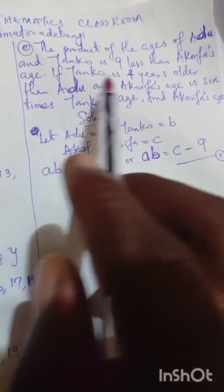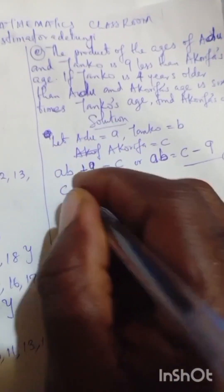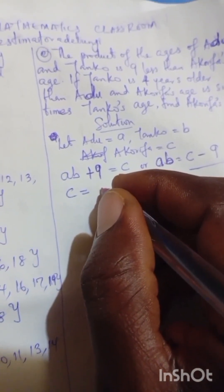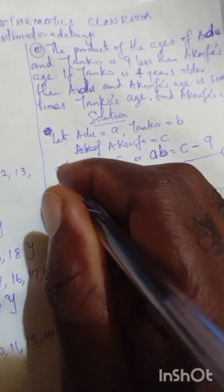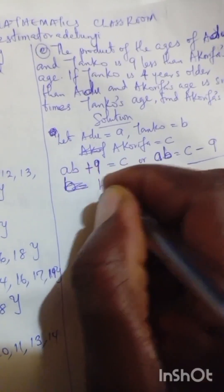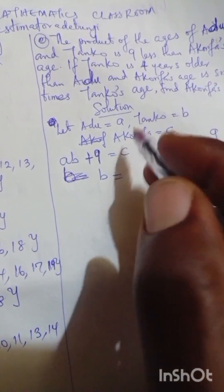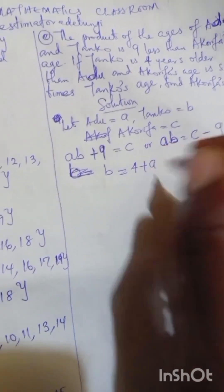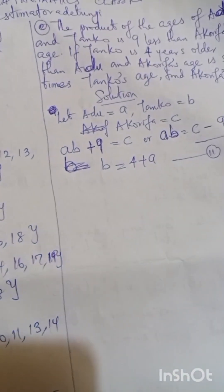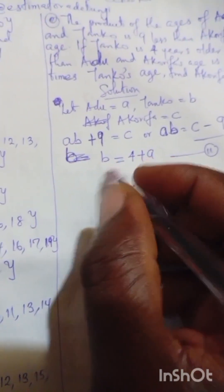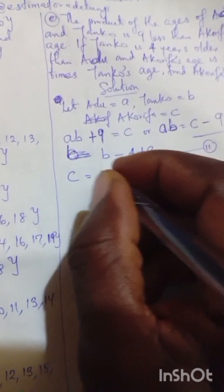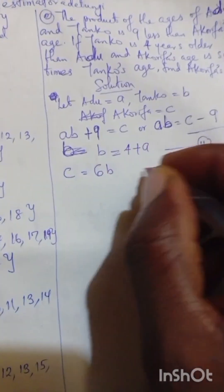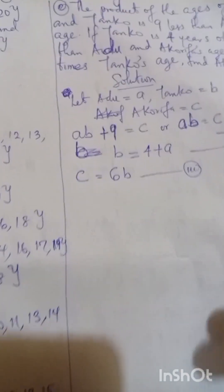If Tanko is four years older than Adieu, that means B = 4 + A. That is equation two. The last statement says Aquifer's age is six times Tanko's age, that is C = 6B. That is equation three. We have three equations and we need to simplify.